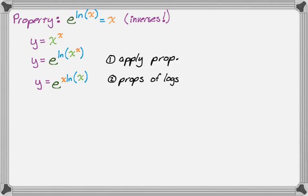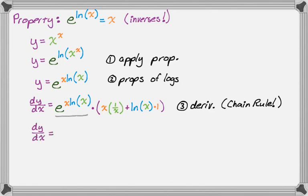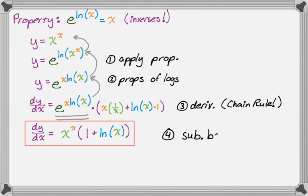Now I can just take the derivative, and I need to remember to use the chain rule. dy/dx is the derivative of e to the u, which is e to the u, times the derivative of u — the derivative of x times ln(x). To do that, I use the product rule: first times derivative of second plus second times derivative of first. Don't forget the product rule and the chain rule. Now I can simplify: e to the x natural log of x is the same as x to the x, so I can replace that, and I get the same answer as before — using substitution at the end.